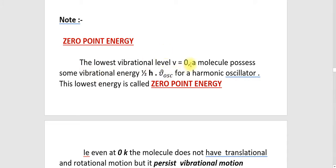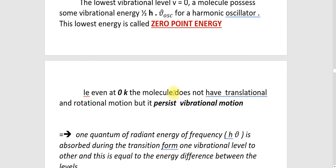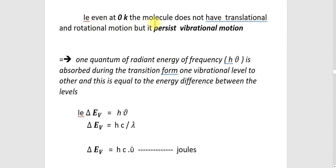The lowest vibrational level V equal to 0 — the molecule possesses some vibrational energy. It is half h nu_oscillation for a harmonic oscillator. This lowest energy is called zero point energy. Even at zero Kelvin, the molecule does not have translational or rotational motion, but it persists in vibrational motion. That is a very important point in spectroscopy. Even at absolute zero, the molecule has vibrational motion, and just because of that vibrational motion the molecule exists in energy — that is half h nu_oscillation — and that energy is called zero point energy.